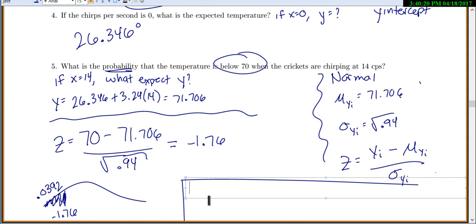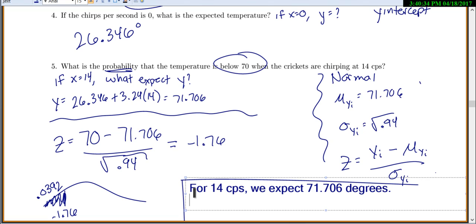So what does this mean? This means for 14 chirps per second, we expect 71.706 degrees. But we know it's not going to be exactly that. It could be a little bit higher, it could be a little bit lower. Specifically, there is a 3.92% chance that it is less than 70 degrees. That's not very high, so that means we really should be getting pretty close to the 71.706 degrees. We don't seem to have a lot of variation here. Or our standard deviation, if you will, is pretty small.